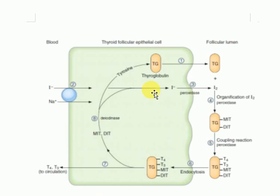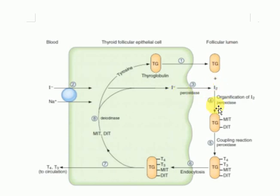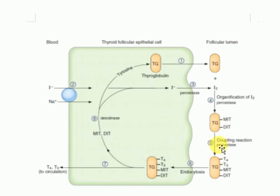Step 3 is the oxidation of iodide to iodine, catalyzed by the peroxidase enzyme. Step 4 is the organification of iodine — iodine reacts with thyroglobulin to form MIT (monoiodothyrosine) and DIT (diiodothyrosine). The same peroxidase enzyme is responsible for this reaction as well.